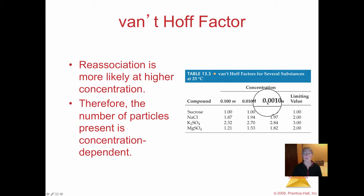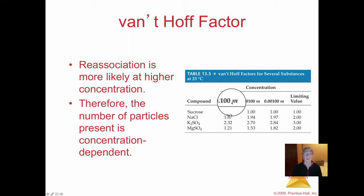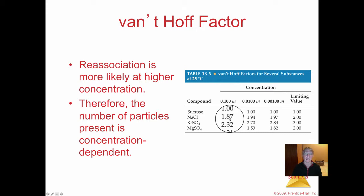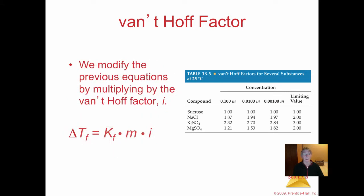Notice that the weaker the concentration, the greater the Van 't Hoff factor. The stronger the concentration, the more likely that the sodiums and chlorides could bump back into each other, and therefore have a slightly lesser effect on the colligative properties. But for our purposes, let's just pretend that it makes two particles of ions for every one mole of salt that dissolves. To do these types of problems, you use exactly the same freezing point depression and boiling point elevation equations — you just multiply them by the Van 't Hoff factor.